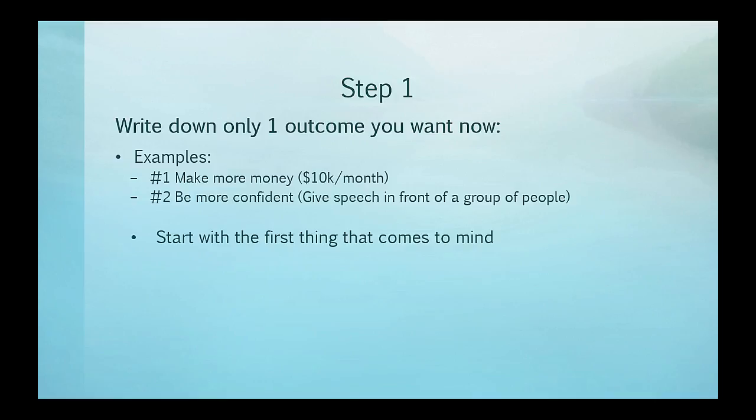Assuming you have that done, the next thing you want to do — looking at the second bullet point — is make it specific. In the first example, the person wrote down 'make more money,' and then in parentheses made it specific: ten thousand dollars a month. In example two, the person started with 'be more confident,' then once they made it specific, wrote down 'give a speech in front of a group of people.'